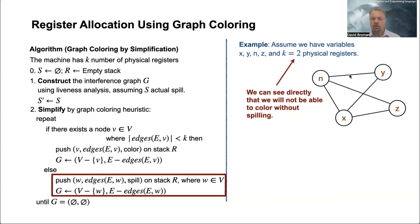When we do this repetition here, we see that there is no chance that we can have the number of edges less than k, because the number of edges here are like three or two, and that is not strictly less than two. So we'll get into this part here. We need to select one node to spill, and we can actually select any node. Good idea to select something with a fairly high degree, typically.